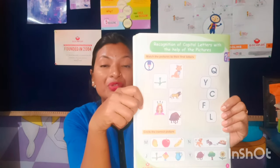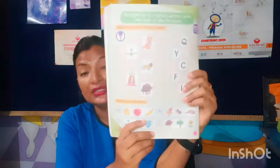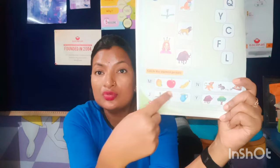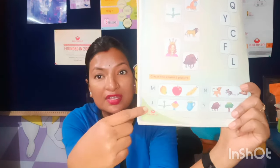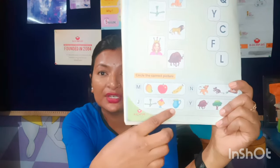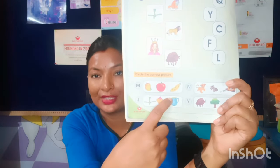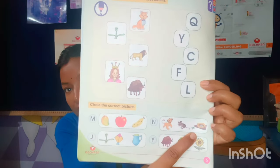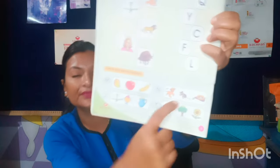There is one more exercise in this topic: 'Circle the correct picture.' The initial letter is given and you choose which picture starts with that letter. For example, M — M for mango, so circle mango. For J — jug starts with J, not fan or kite, so circle jug. For N — N for nest, circle the nest. For Y — Y for yak, circle yak. Now coming to the next topic: recognition of small letters — students have already completed small letters, so this will be revision work.